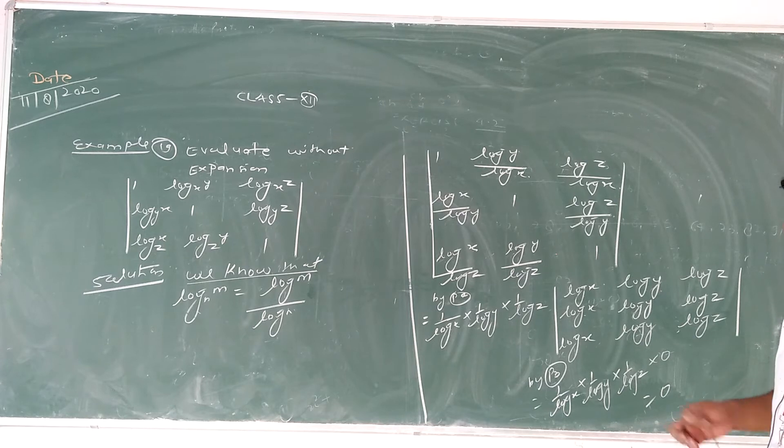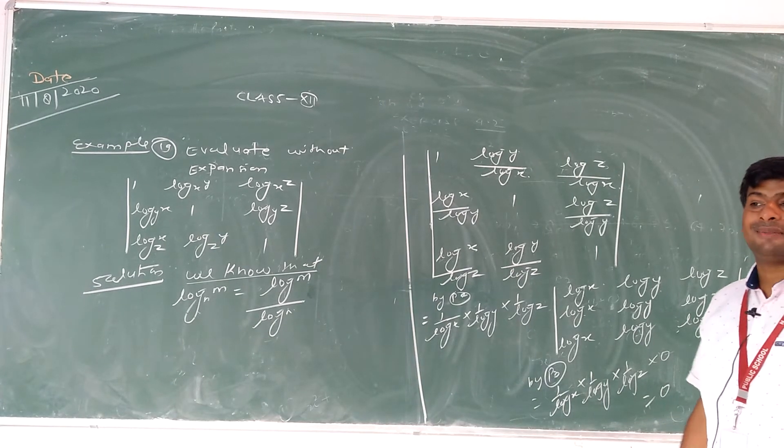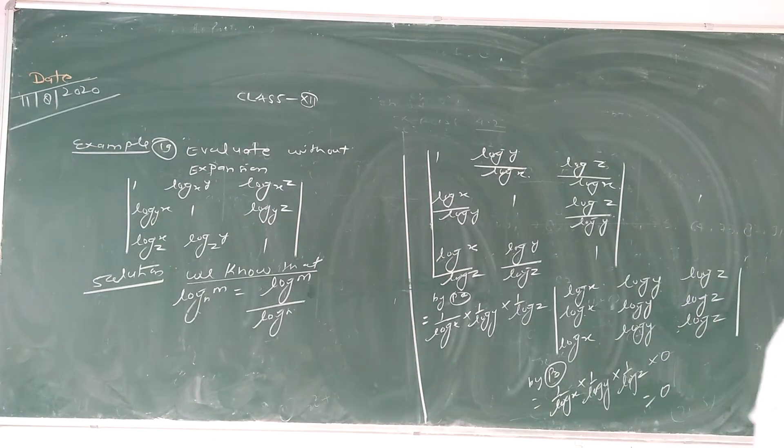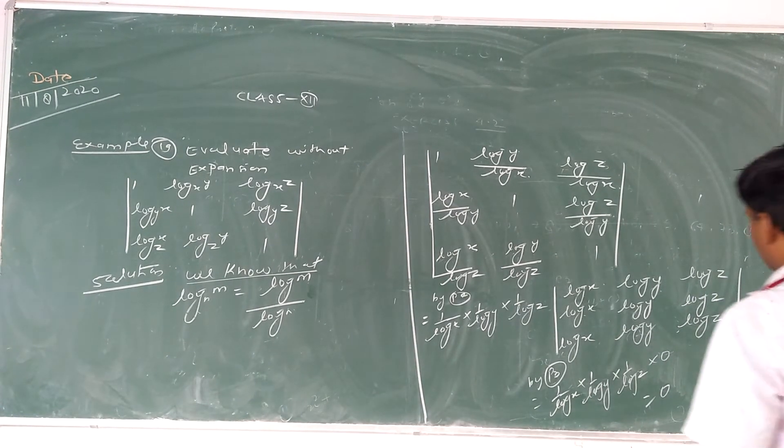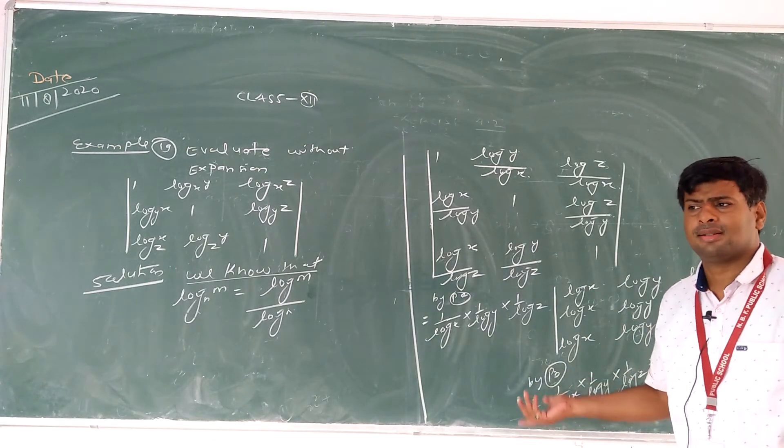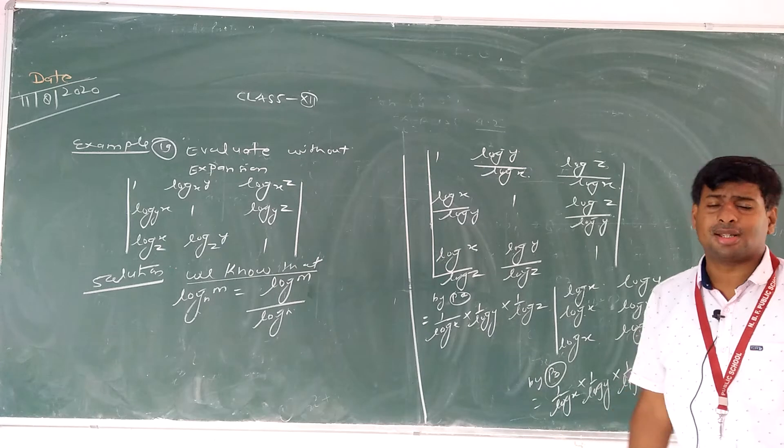You see that by using property P3, if any rows or columns are identical, the value of determinant is zero. You can see that all rows are identical, so the value of this determinant is zero.